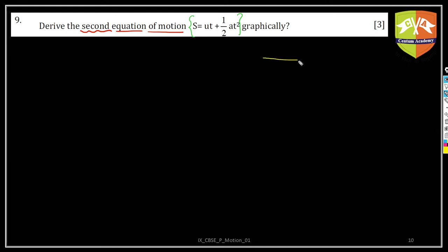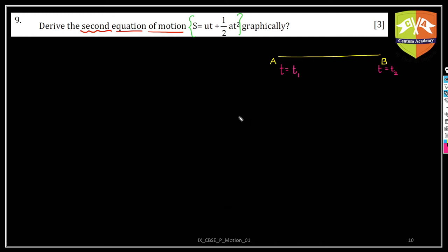As we saw in the previous problem, let's draw a straight path. This is the journey, with point A and point B — the body is moving from A to B. At point A, time is t1, and at point B, time is t2. We'll describe the general case first and then come to this equation. So at t = t1 the particle is at A, and at t = t2 the particle is at B.